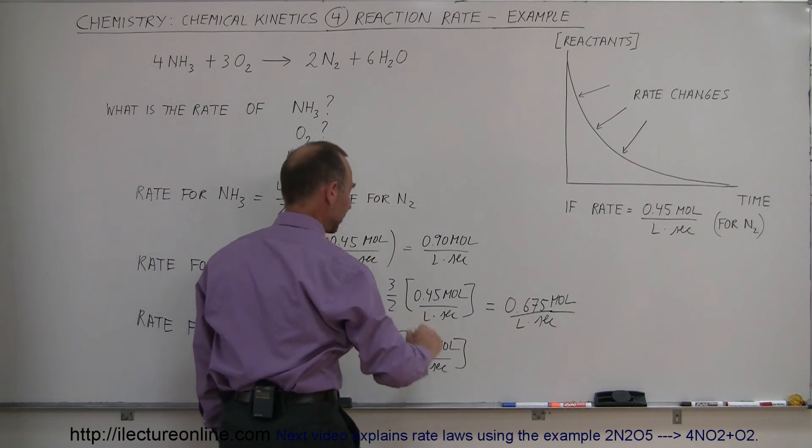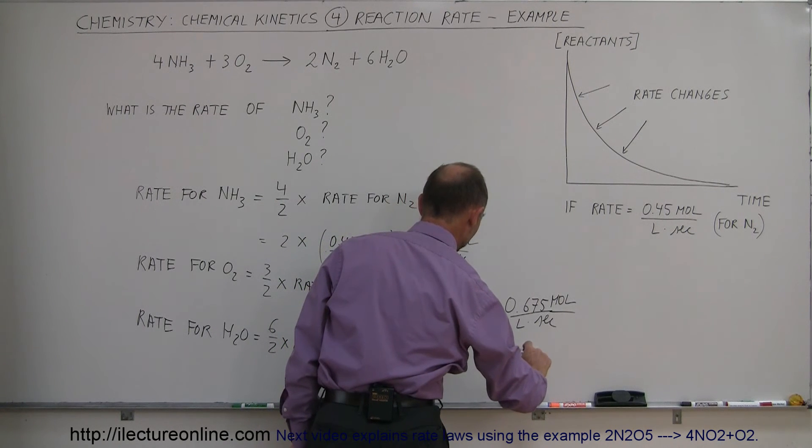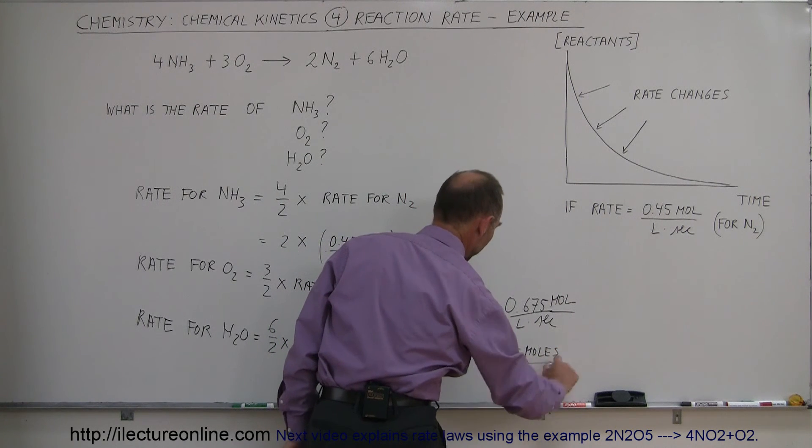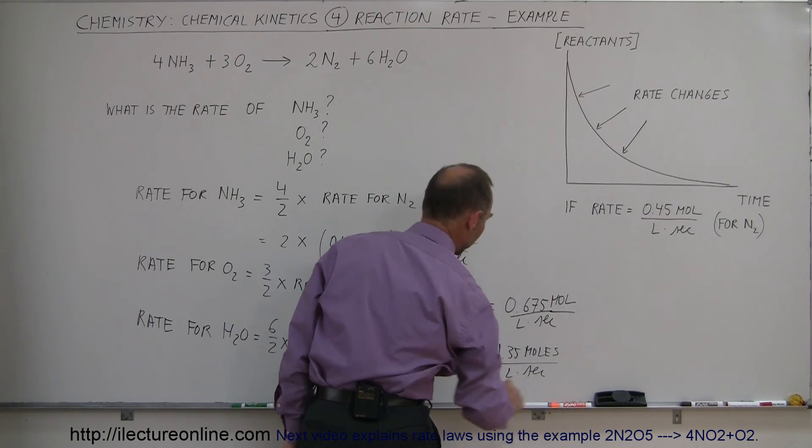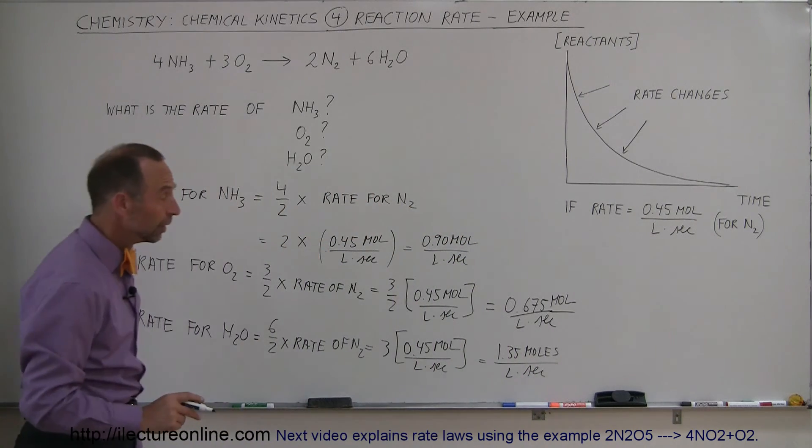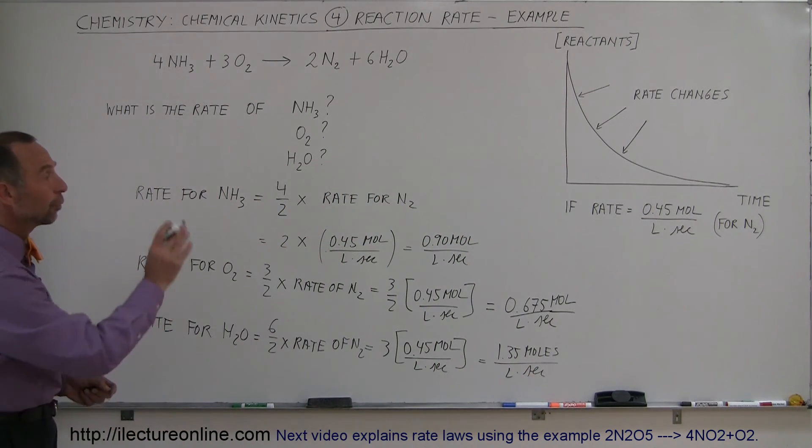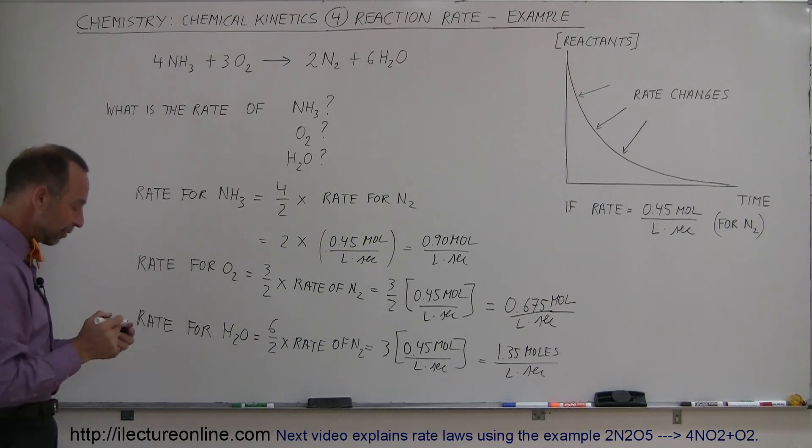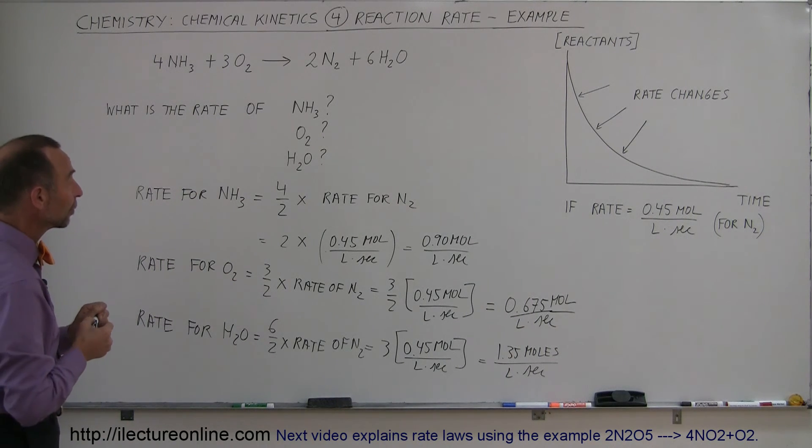And so 3 times that, that would be 1.35 moles per liter times seconds. So you see, that's very straightforward. It's simply a ratio. If you know the rate for one, you can easily calculate the rate for the others, for the reactants and for the other product.